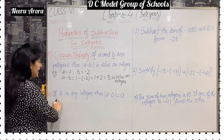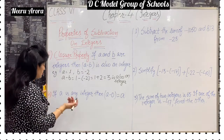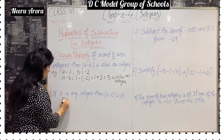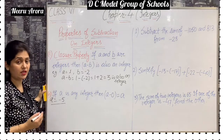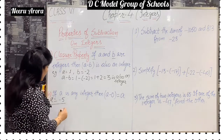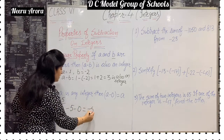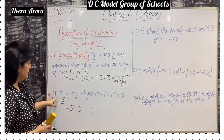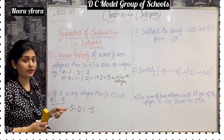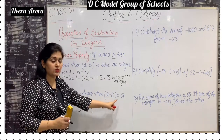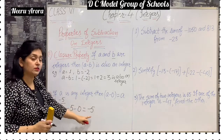Now if A is any integer, then A minus 0 is equal to A. For example, A is equal to minus 5, and minus 5 is an integer. So minus 5 minus 0 is equal to minus 5. So if A is any integer, the difference of A and 0 is the number itself. The difference of minus 5 and 0 is minus 5.